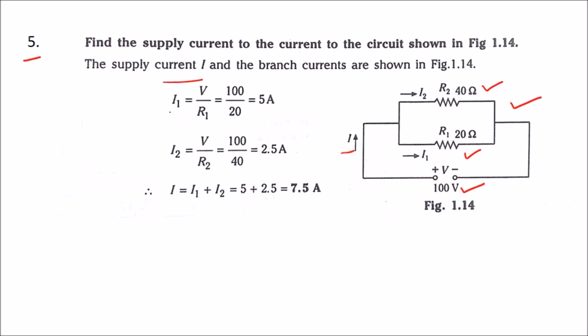I1 equals V divided by R1, that is 100 divided by 20, which equals 5 amps. I2 equals V divided by R2, that is 100 divided by 40, which equals 2.5 amps.